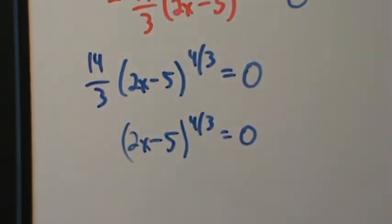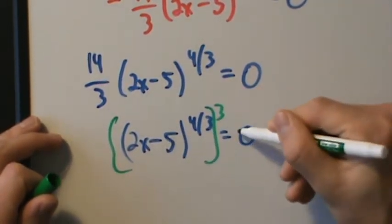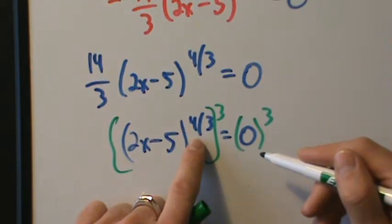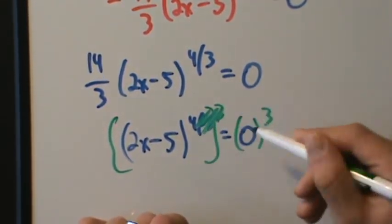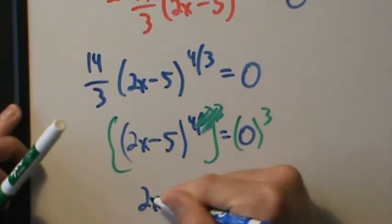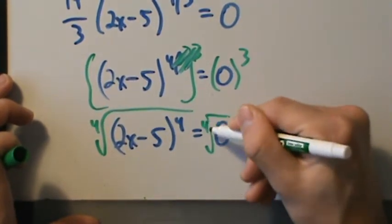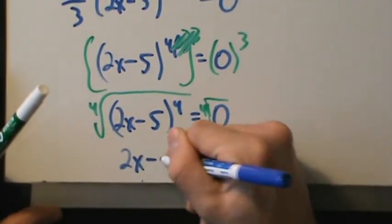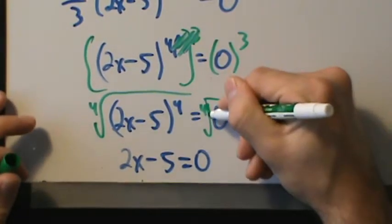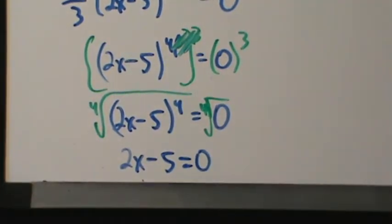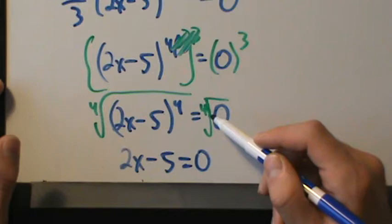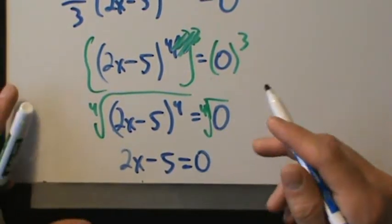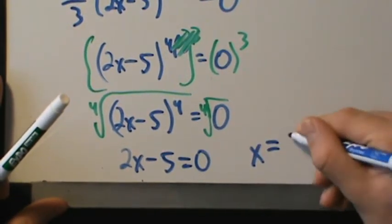Raise both sides to the third power: the exponent becomes 4/3 times 3 = 4, leaving (2x minus 5) to the 4th equals 0. Then take the fourth root of both sides — the fourth root of 0 is just 0, so 2x minus 5 equals 0. Adding 5 and dividing by 2 gives x equals 5/2.